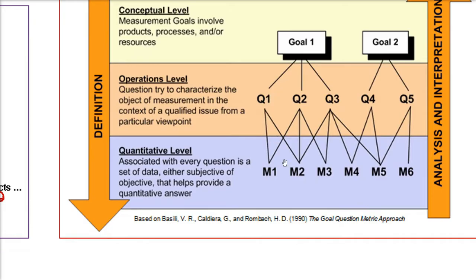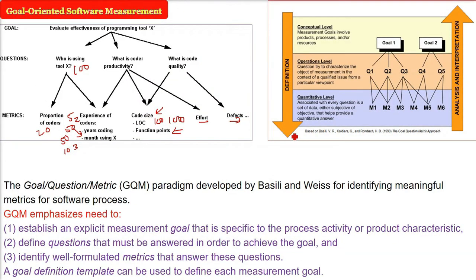These are metrics. These are at the quantitative level, associated with every question. This is a set of data, either subjective or objective, that helps us to give a quantitative number. So this is GQM or goal question metric.